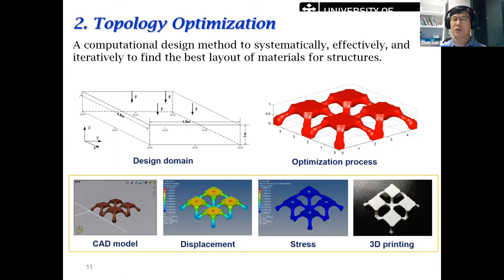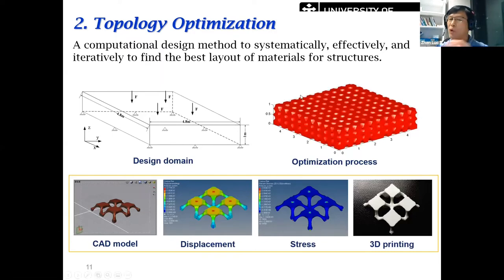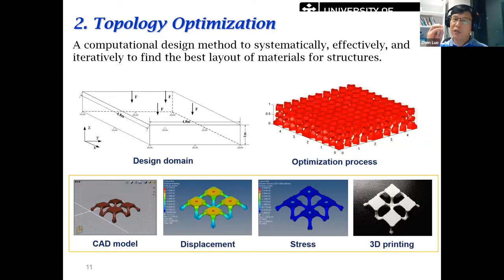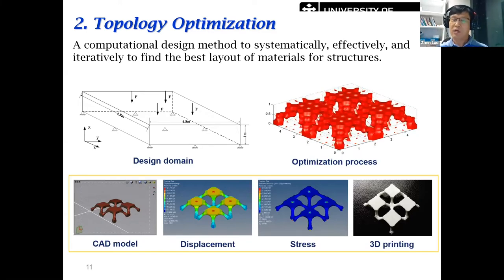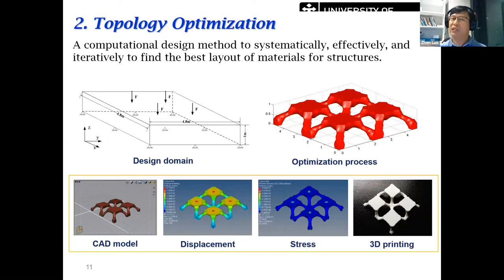Using topological optimization, we can achieve the maximum bulk modulus and shear modulus, or zero thermal expansion coefficient, or negative Poisson's ratio — reaching the Hashin-Shtrikman bounds. This numerical method gives us a lot of freedom and flexibility to design different macro structures with different effective properties. That's the benefit of using the numerical method.